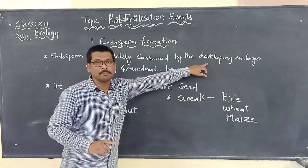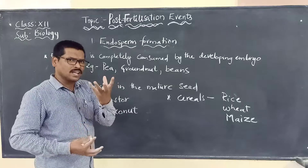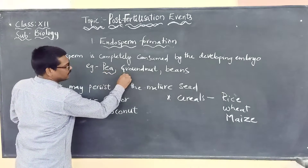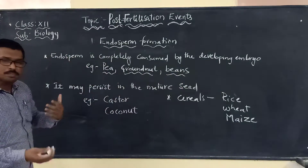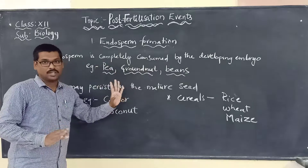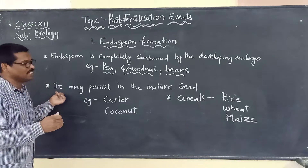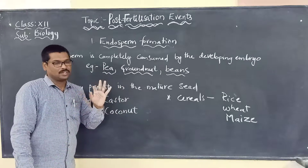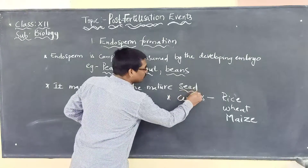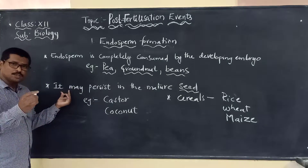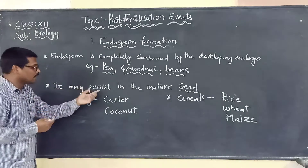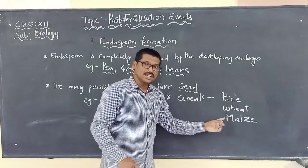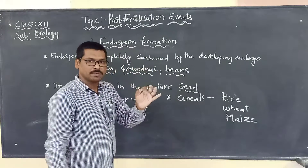Endosperm is completely consumed by the developing embryo in some cases — such as pea, groundnut, and beans. But in other cases, it may persist and be retained even in the mature seed — for example, castor and coconut. In seeds like rice, wheat, and maize, the endosperm also persists.